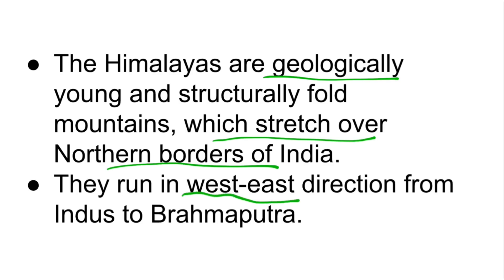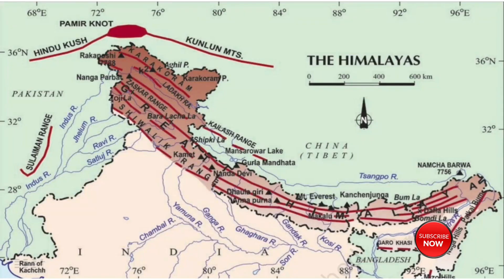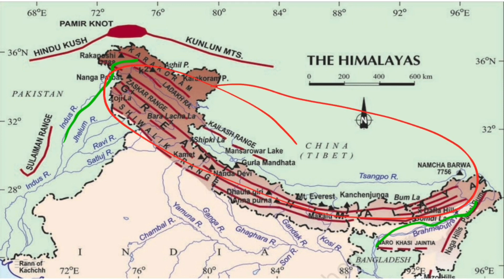The Himalayas run from west to east, extending between the river Indus and the Brahmaputra. On the map, you can see the Indus River on one end and the Brahmaputra River on the other — these mark the extent of the Himalayan mountain ranges.